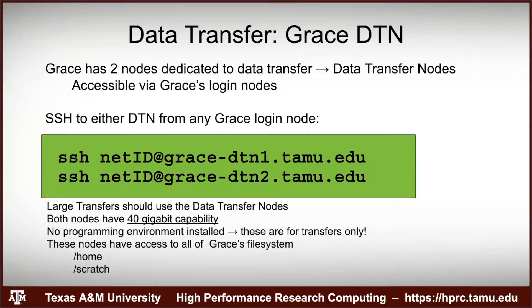The DTNs have FTP utilities like rsync and SCP installed, but no compilers. Use them when making transfers. They're accessible from the login node: first log into Grace, then SSH to your NetID at grace-dtn1 or grace-dtn2. You'll need to enter your password again.